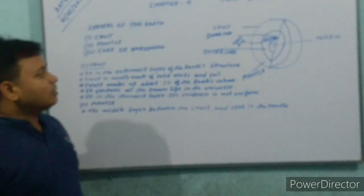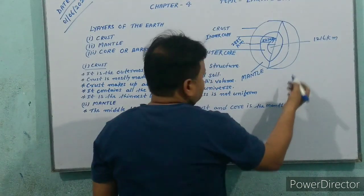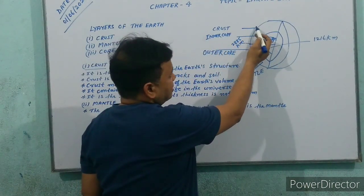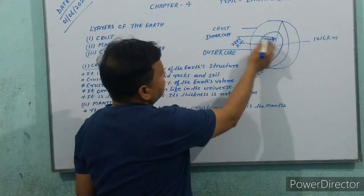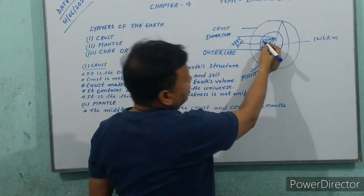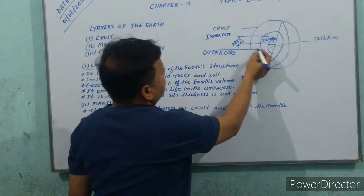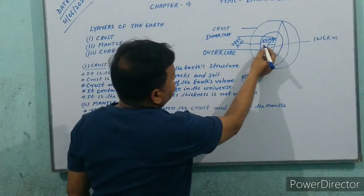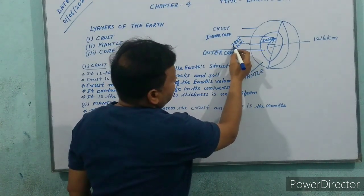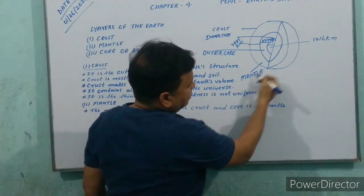I am going to tell you about the shape of the Earth. Look at the crust. This is known as the crust and it is known as the inner core. The inner core diameter is 2,270 km. The outer core has a diameter of 2,085 km, and this is the mantle.